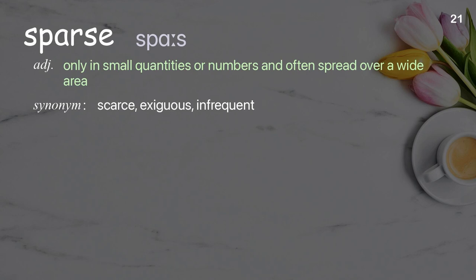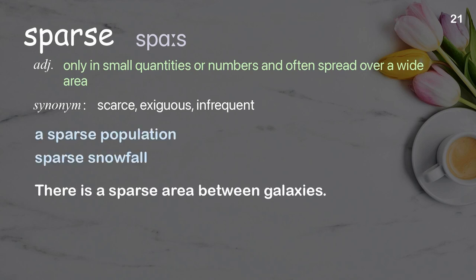Sparse: Only in small quantities or numbers and often spread over a wide area. Examples: A sparse population. Sparse snowfall. There is a sparse area between galaxies.